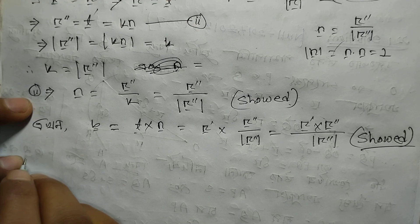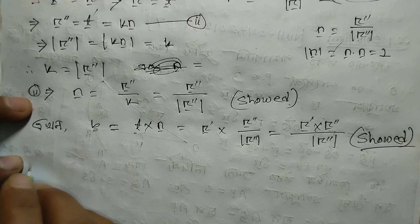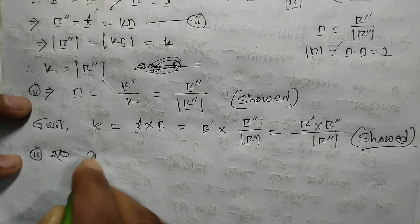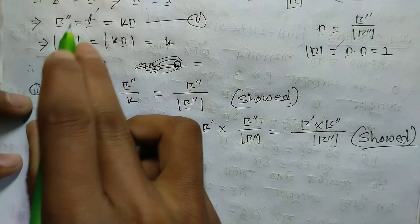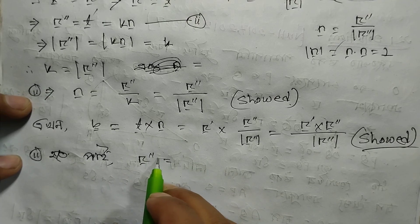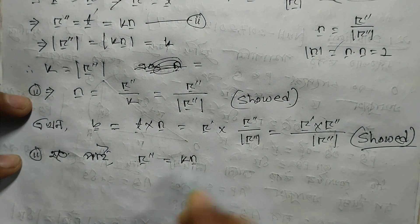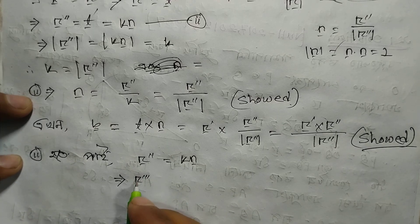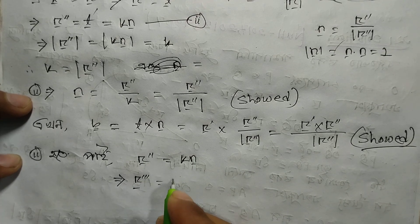r double prime vector equals to kappa times n. Now, here if we differentiate r again — differentiating with respect to s — we get r triple prime vector. Differentiating again gives r triple vector, and kappa n — differentiating this using product rule.